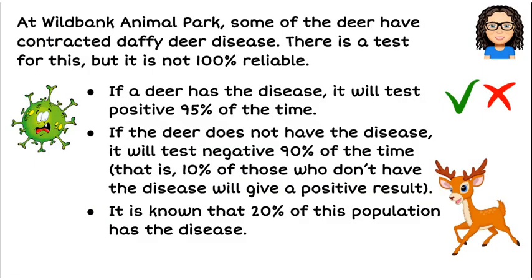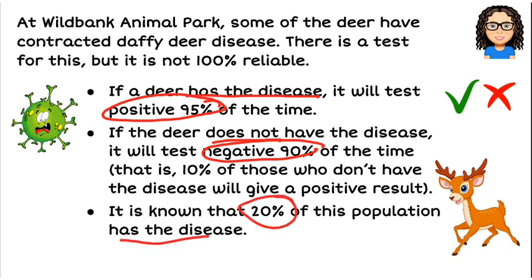So here's our problem. We've been told that at this animal park some of the deer have contracted daffy deer disease. There's a test but the test is not 100% reliable. If a deer has the disease it is going to test positive 95% of the time. If the deer does not have the disease it will test negative 90% of the time. And lastly it is known that 20% of this population has the disease.